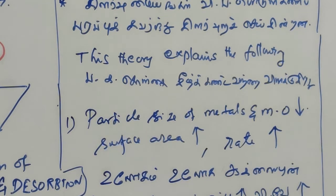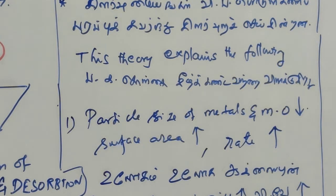The entire surface area is utilized. When the catalyst is a metal or oxide of metal and its particle size is decreased, the surface area is increased. As surface area increases, the number of active centers increases, and the rate of reaction increases.